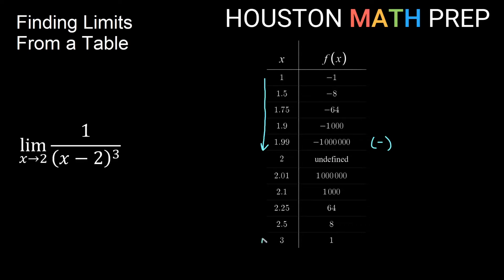As I approach from the right side of 2, 3, 2.5, 2.25, 2.1, 2.01, you can see we're getting bigger and bigger numbers, actually the same values. We're actually getting positive numbers. So I'm getting numbers that are getting larger in the positive direction. So if we're getting more and more negative on the left side as we approach 2 and more and more positive as we approach 2 on the right side, then we're definitely not going to the same y value. So this limit does not exist.